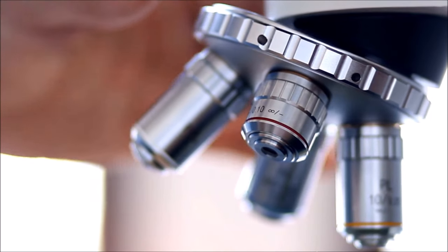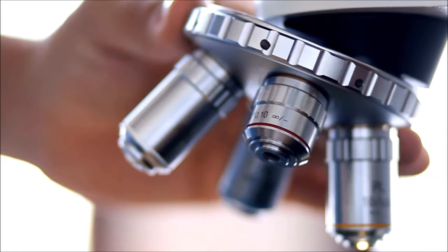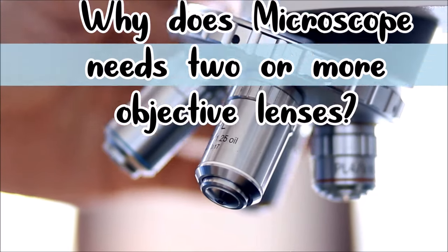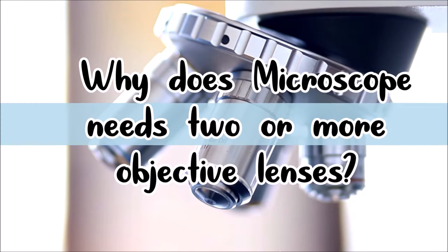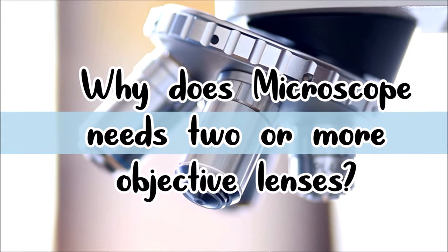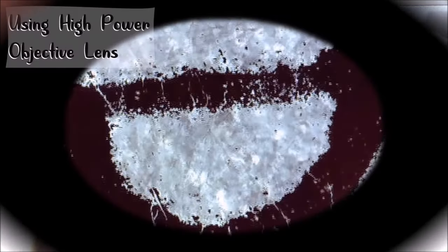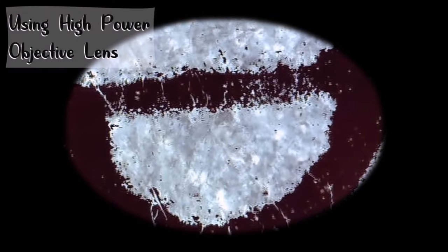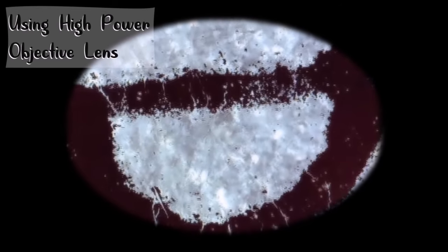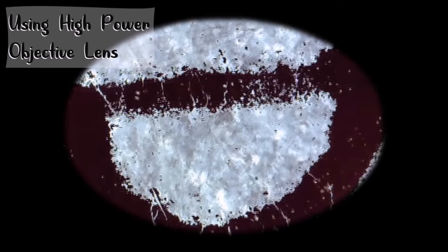Other microscopes have even more objective lenses. The question is, why does this microscope need two or more objective lenses? Well, take a look at this. If you use high power objective lens and see that the image is bigger than you need to see the full details, you might as well use other objective lens until you get the best image.